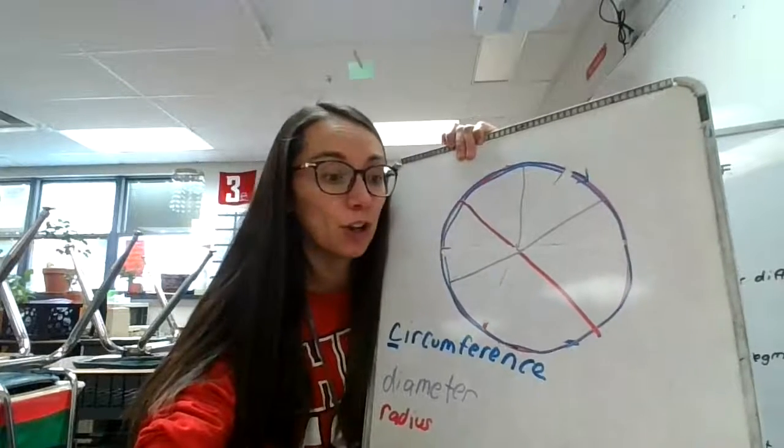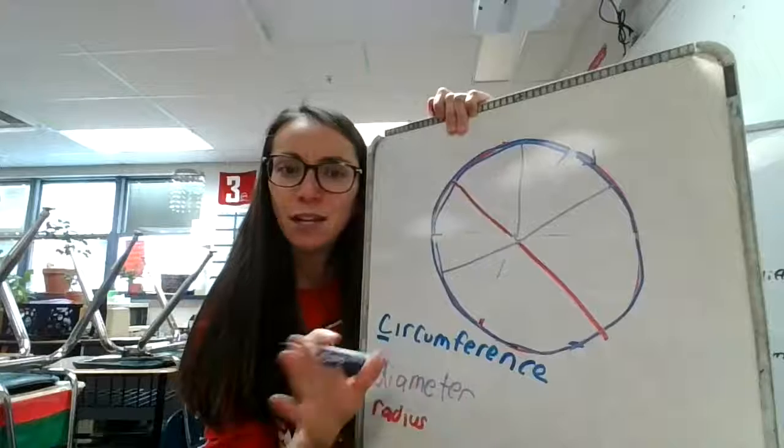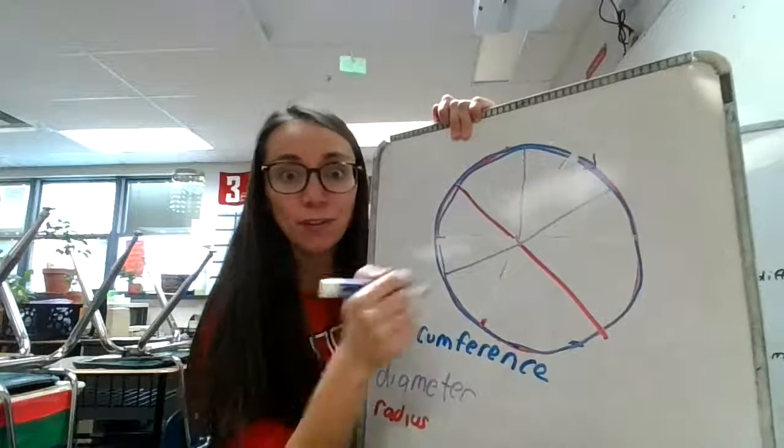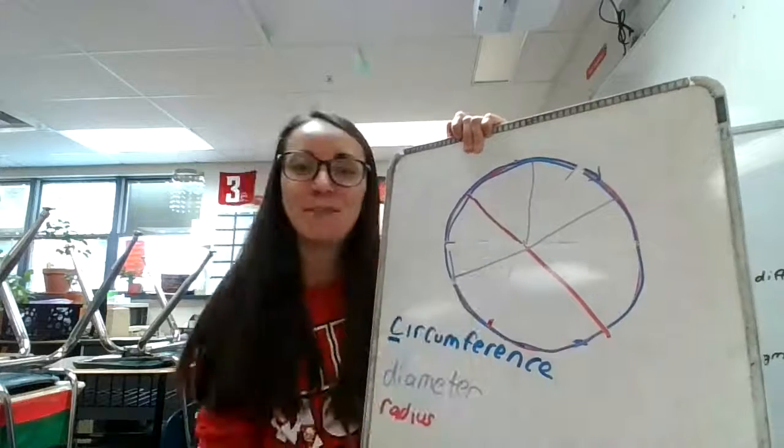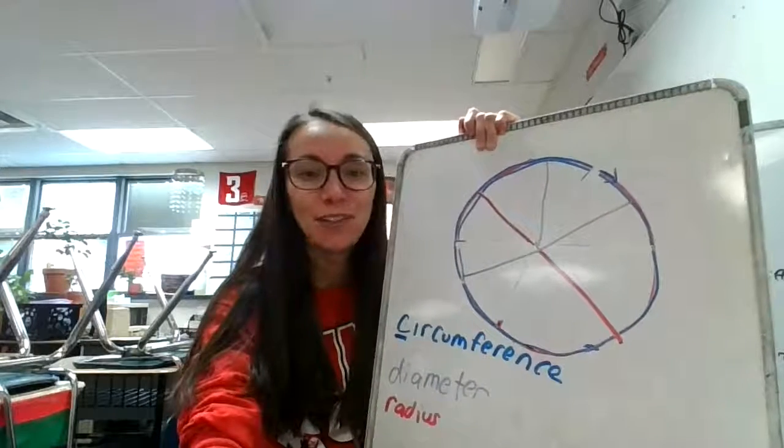All right, now let's go ahead and take a look at page five. Now, do you remember these three? Double check yourself and make sure you know what the circumference is, what the diameter is, and what the radius is. All right, now let's go ahead and take a look at page five.